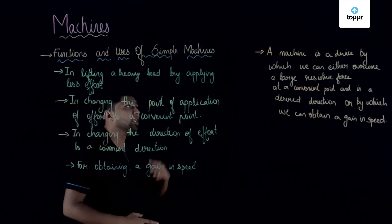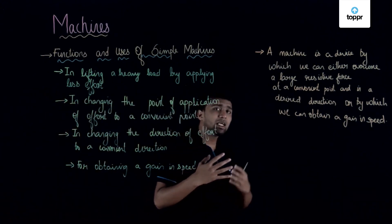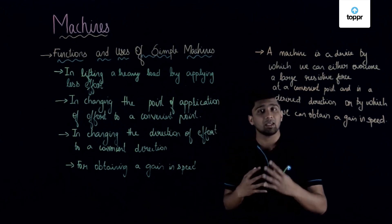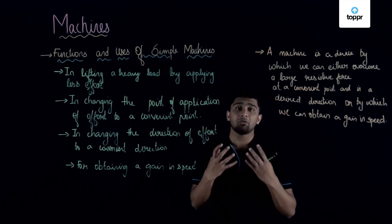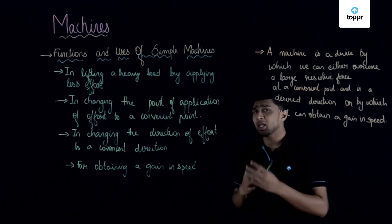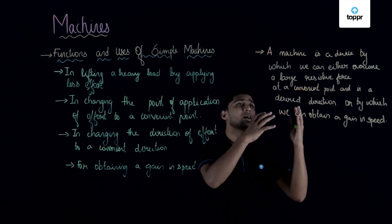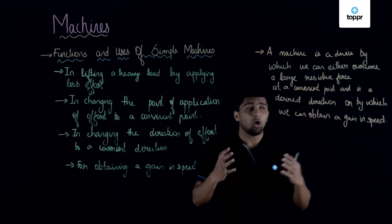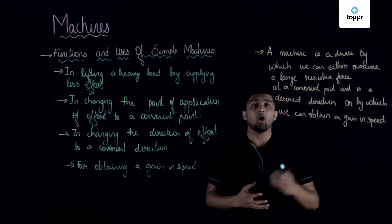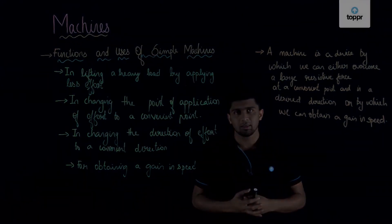So a simple machine is a device by which we can either overcome the resistive force at a convenient point and in a desired direction, or by which we can obtain or gain a speed. Keep watching, a lot more solutions here. Subscribe and learn.